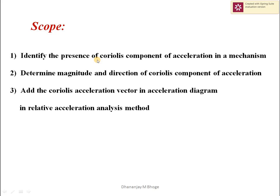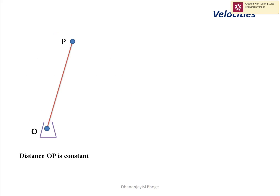The scope of this lecture is to identify the presence of Coriolis component of acceleration in a mechanism, to determine magnitude and direction of Coriolis component of acceleration, and to add the Coriolis acceleration vector in the acceleration diagram in relative acceleration analysis method. We are not going into any mathematical derivations or proofs. We will only derive conclusions to help us plot acceleration vectors including Coriolis component in relative velocity and acceleration analysis method.